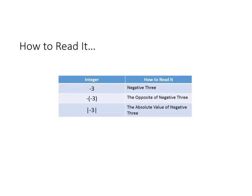Let's review how to read some of these. The first one is read as negative three. The next is read as the opposite of negative three — and the opposite of negative three is three. The last one is the absolute value of negative three, and that would also be three.